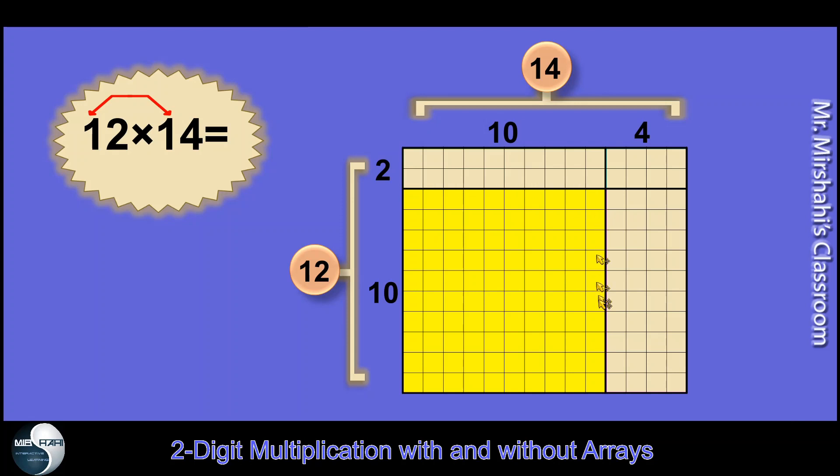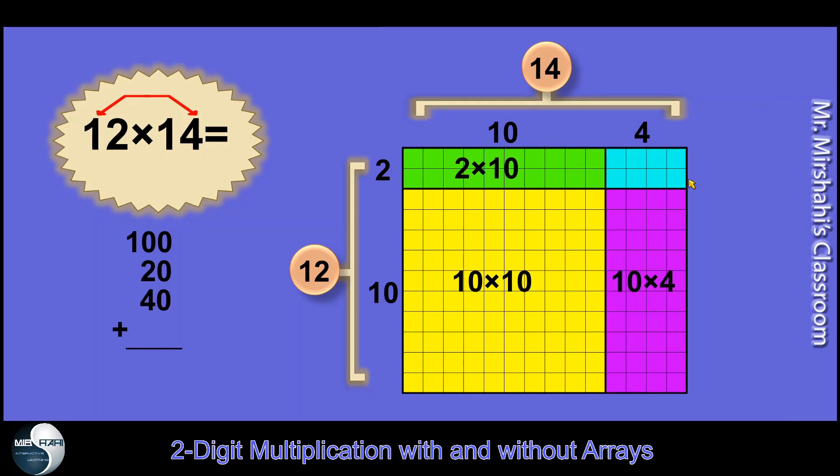Always we do the big rectangle first because it's easier. Here we have 10 times 10. This side is 10, this side is 10. You can see up here. 10 times 10, that's 100. And I put it here. This is 2 times 10, 2 and 10, and I get 20. The next rectangle, I should get 4 times 10 or 10 times 4. That's 40.